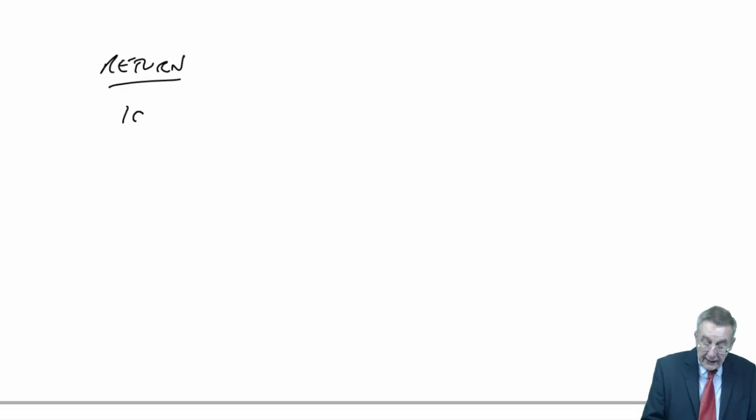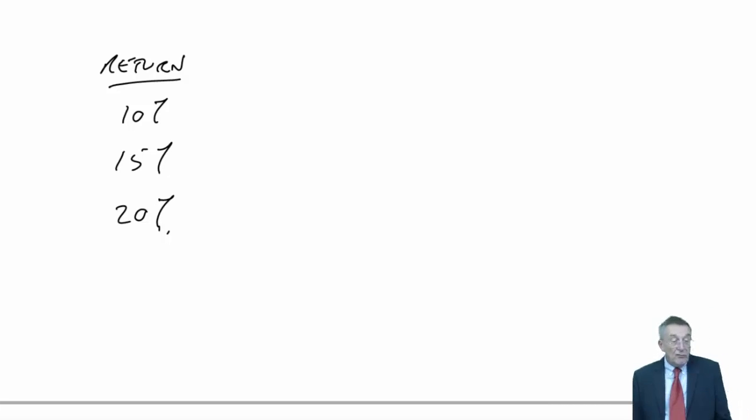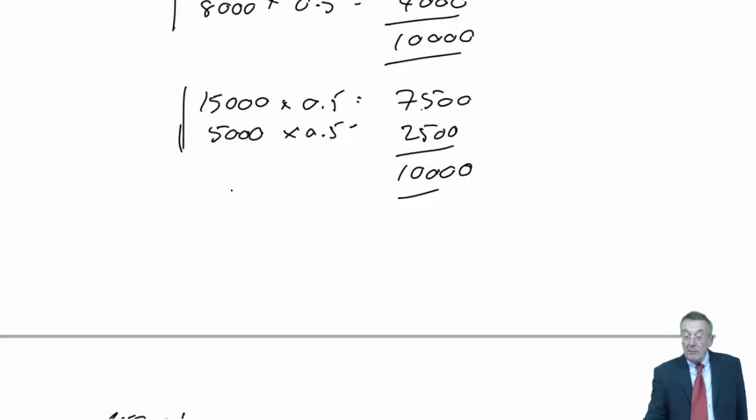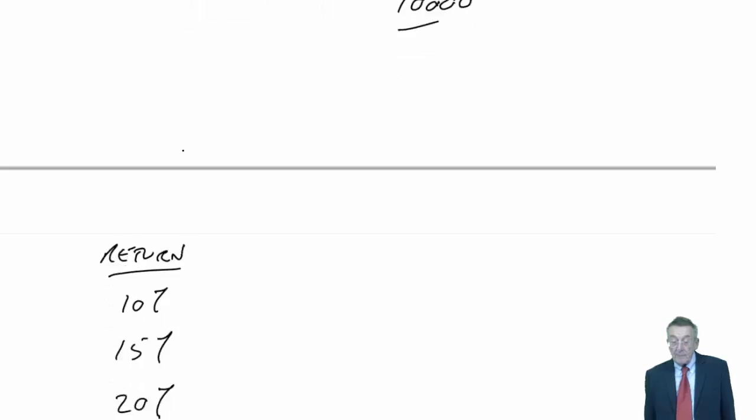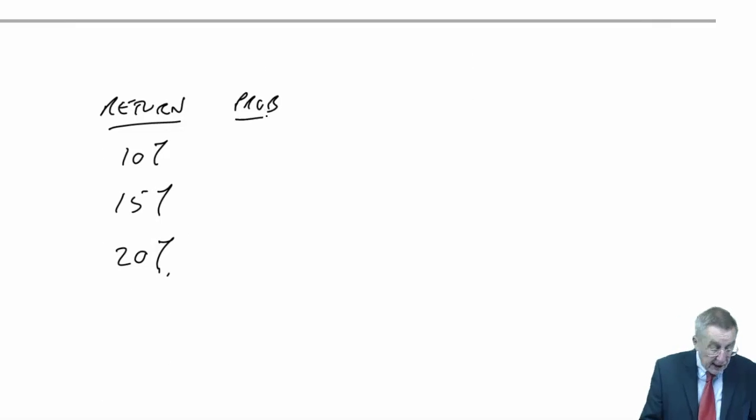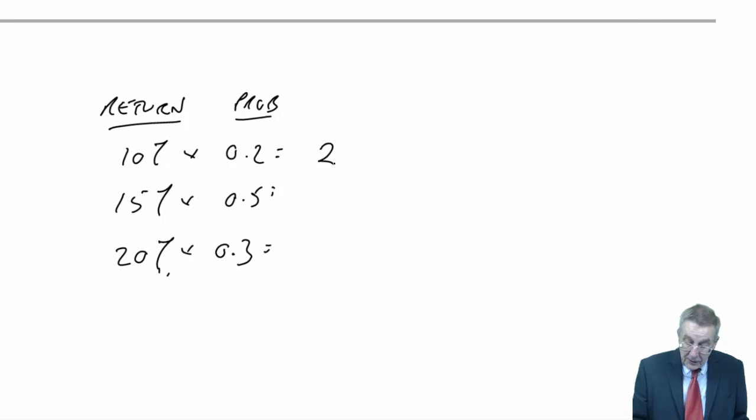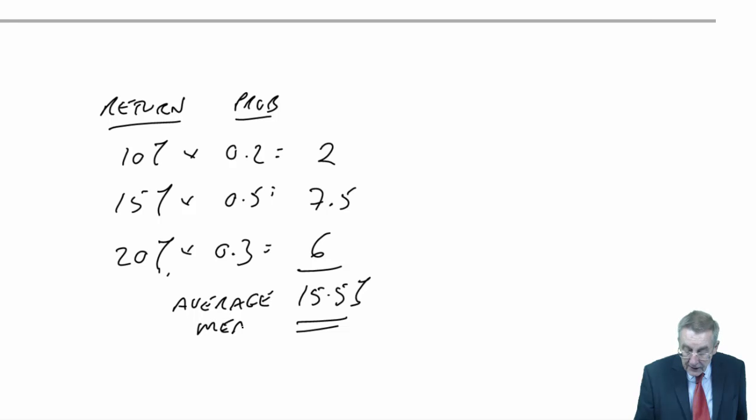You could be asked to work out a standard deviation. It's very easy. Look at exercise 3. There's a formula above, but it's simply a standard formula. It says we're going to get a return of 10%, 15%, or 20%. We know the probabilities of each outcome: 0.2, 0.5, 0.3. The expected or the average multiplied by the probabilities comes to 15.5. There is the expected or the average or the mean.